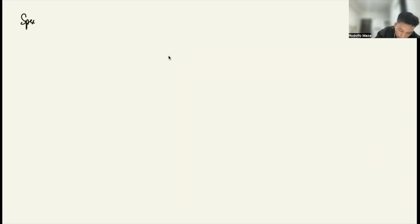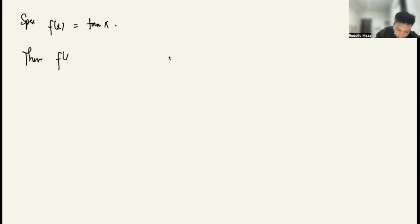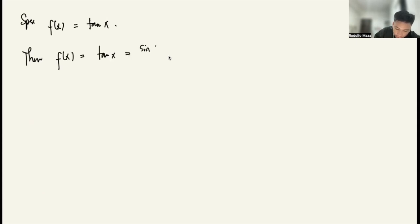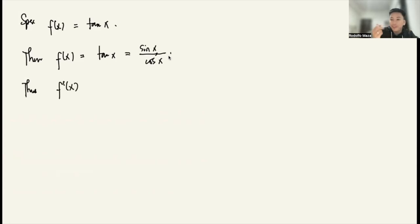Now suppose f(x) = tangent x. From trigonometry, tangent x equals sine x over cosine x. So f(x) = tangent x is the same as sine x over cosine x. We can use the quotient rule: low d-high minus high d-low over low squared.